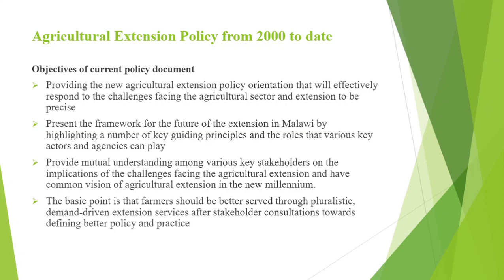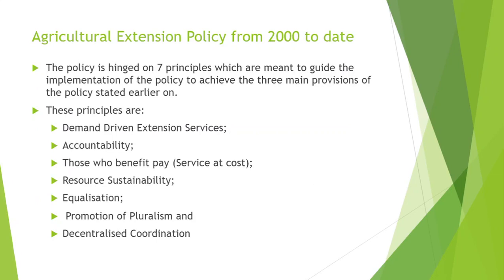The policy is hinged on seven principles which are meant to guide the implementation of the policy to achieve the three main provisions. These principles include: demand-driven extension services, accountability, those who benefit pay, resource sustainability, equalization, pluralism, and decentralized coordination. The first principle — demand-driven extension services — says that farmers have needs and must demand extension according to their needs, to which service providers respond. Extension must be demand-driven, not supply-driven. Farmers are clients, not passive recipients, and they must be more in control. This was to help them respond better to the new opportunities being created by democratization, marketization, and decentralization.